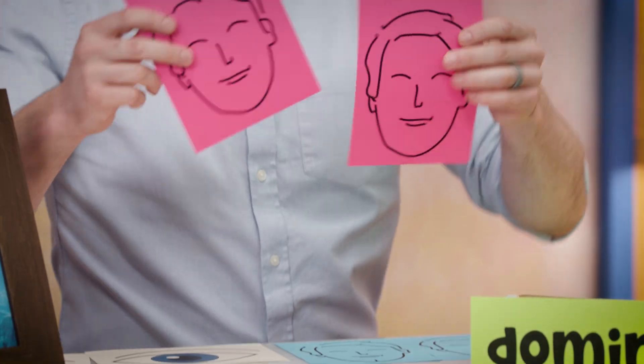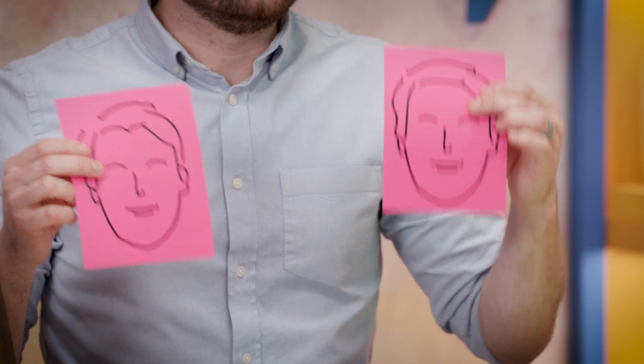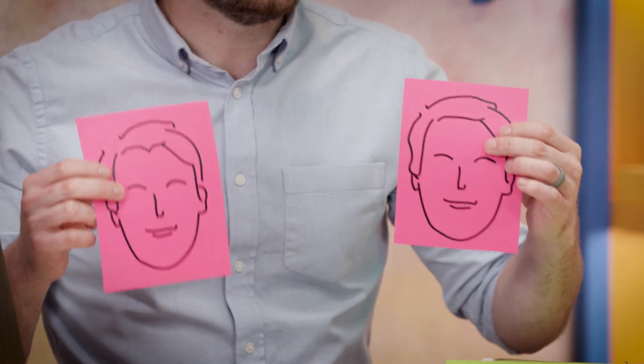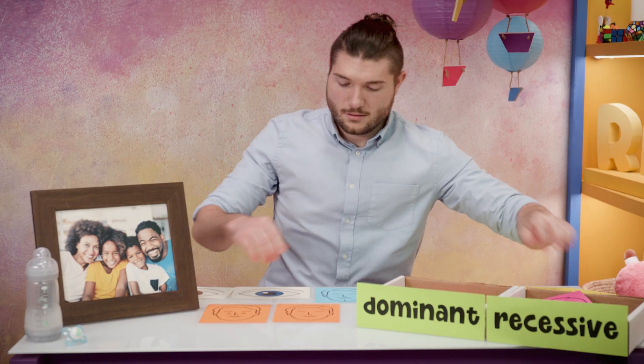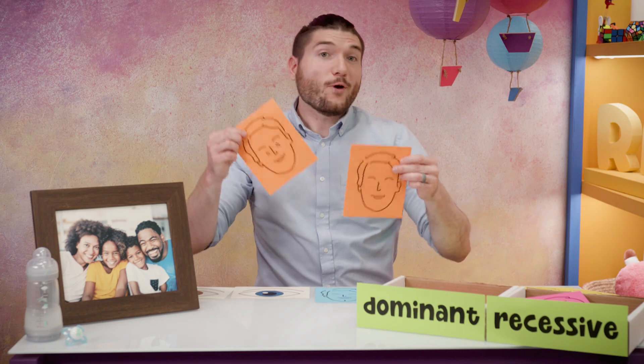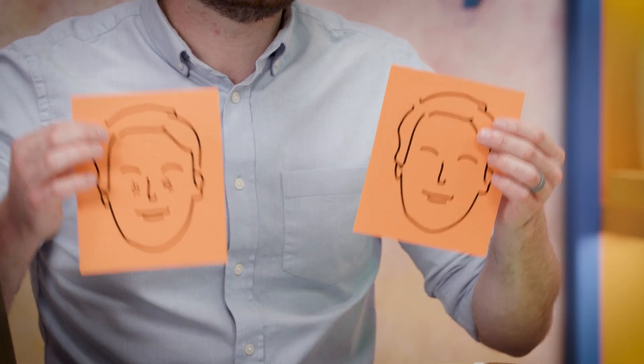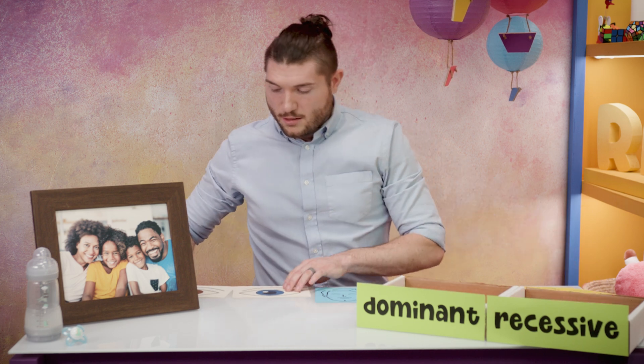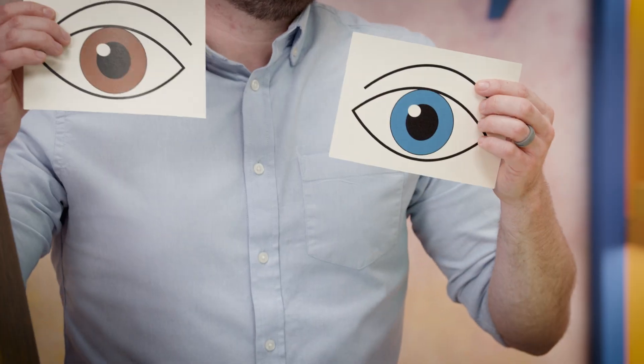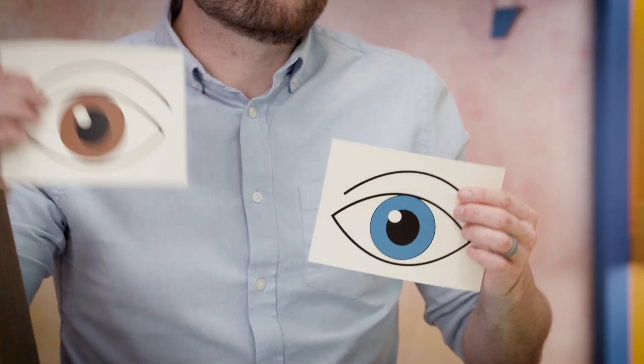What about blonde or red hair, or blue or green eyes? If you have these traits, then recessive traits have been passed down to you. If you have freckles, you have a dominant trait. Dimples are also dominant. Take a look at these examples: widow's peak is dominant, while no widow's peak is recessive. No freckles is recessive, and freckles are dominant.